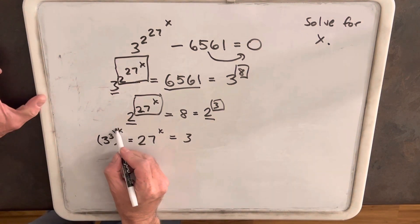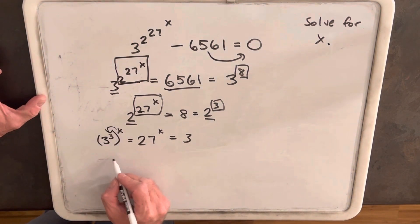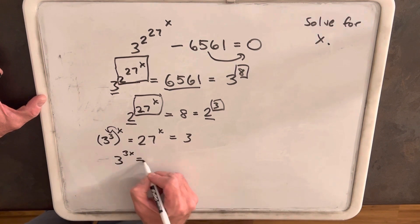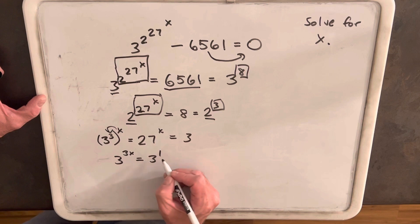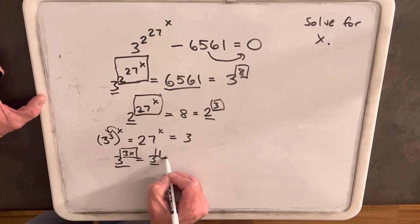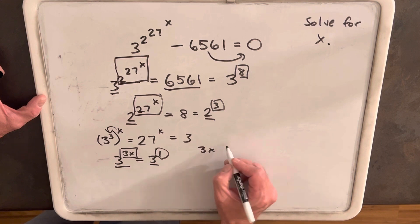But then next we could just multiply this x inside the parentheses and we have 3 to the 3x equals 3. And I'll just write the exponent here as 1. So again, we have the same base comparing exponents. We're saying 3x equals 1.